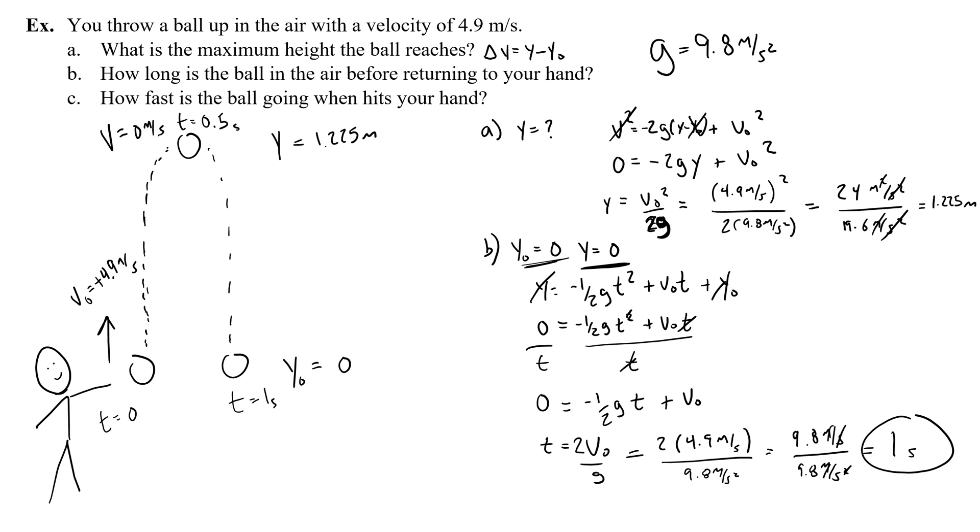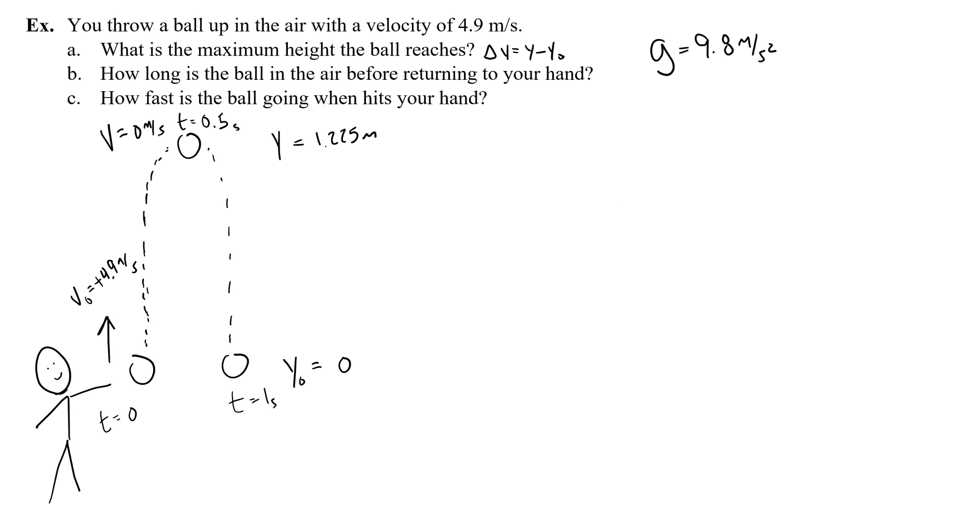Okay, so now, let's take a look at how fast the ball is going when it hits your hand. Let's clear some room, and then we'll write c. Okay, so how fast is the ball going when it hits your hand? Well, if it takes 1 second to go all the way up and then come all the way back down, maybe that's the best way for me to go about this. I know the initial velocity is 4.9, I know the time to go up and come back down, again, that's when the ball will hit your hand. 1 second. I know that the acceleration due to gravity is 9.8, and I want to find the velocity.